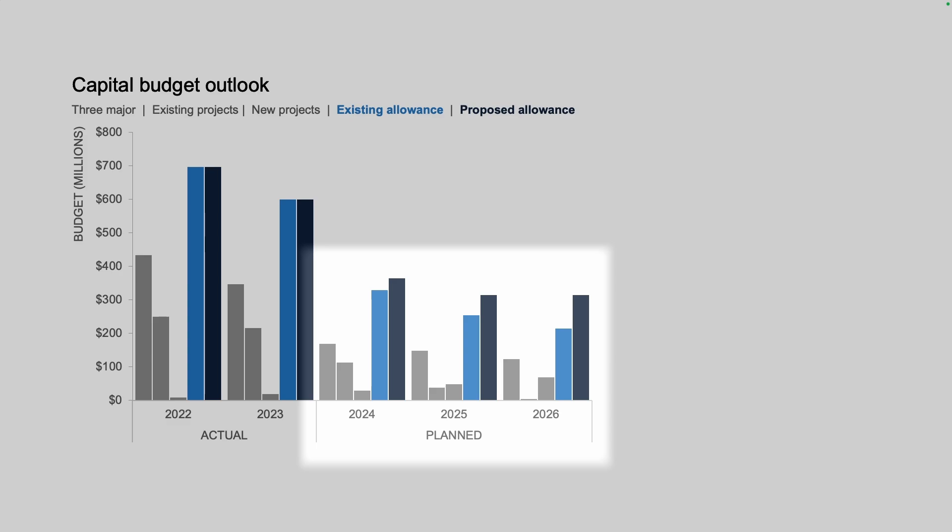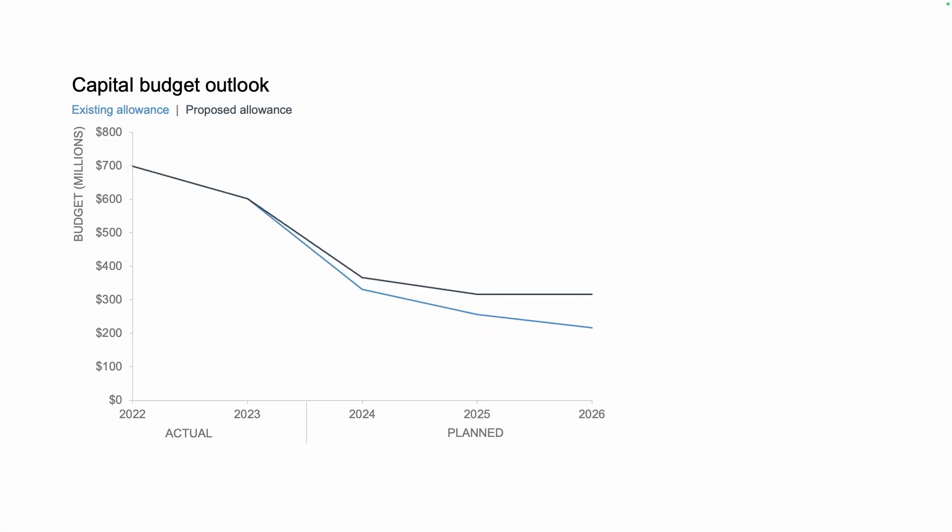To focus on that more, we might turn to a simple line chart. This works well to see the trend, but we are also interested here in the gap between the lines — the area. We can focus on that by filling that area with color. This now provides an immediate sense of this widening gap between the existing allowance and what's been proposed.